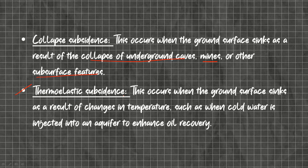The fourth type is thermoelastic subsidence. This occurs when the ground surface sinks as a result of changes in temperature, such as when cold water is injected into an aquifer to enhance oil recovery. Another example is permafrost, in which the soil is covered by ice. When the ice melts, the space is filled by soil and it starts sinking.